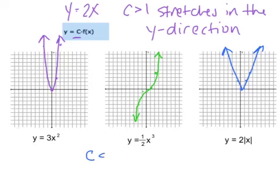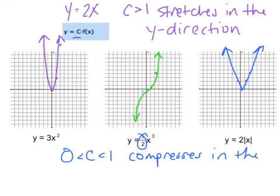If c is less than 1, like the fraction, it compresses. And it has to be between 0 and 1, and it compresses in the y direction. Essentially, it makes your graph taller or shorter.